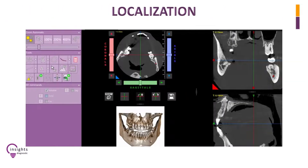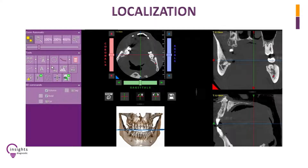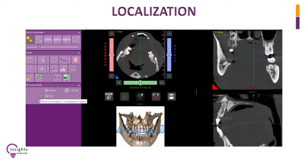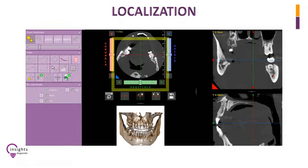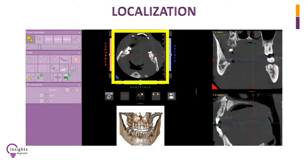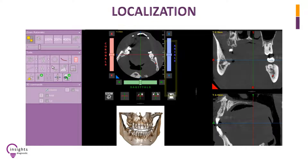Now, click on the Axial box under 3D command and the letter T beside it to make it transparent. You are now able to use your 3D model as reference for your axial view. Then navigate the axial window to visualize either the maxillary or mandibular region.